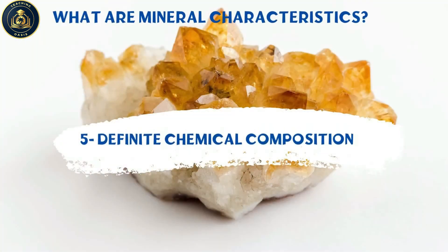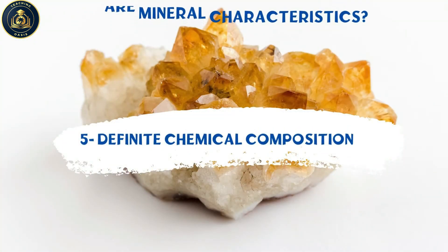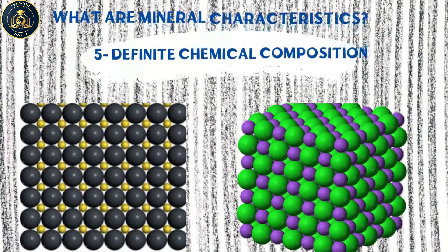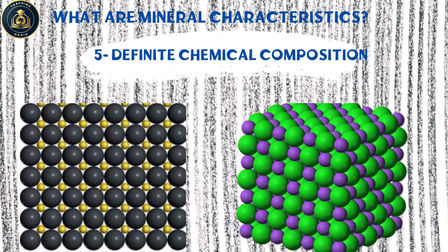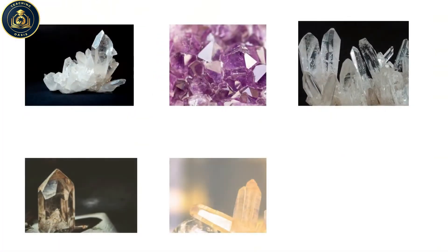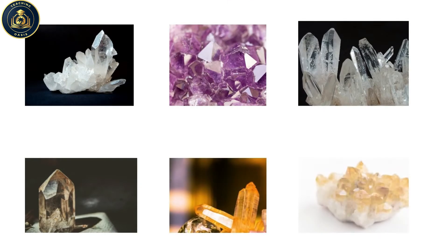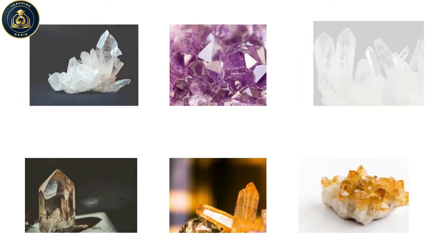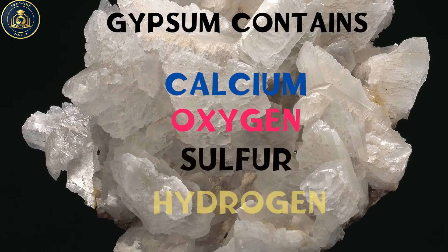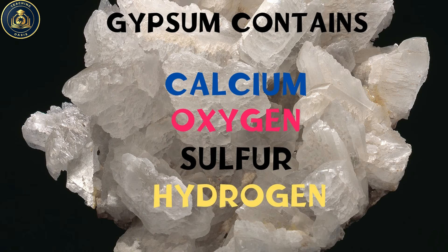Definite chemical composition: a mineral has a definite chemical composition. The repeating pattern of a mineral's particles forms a solid called a crystal. Gypsum always contains calcium, oxygen, sulfur, and hydrogen in set proportions.